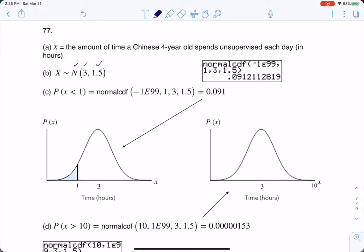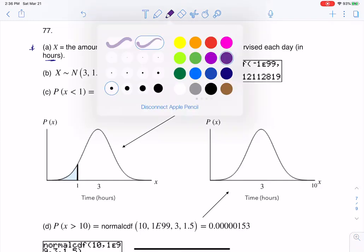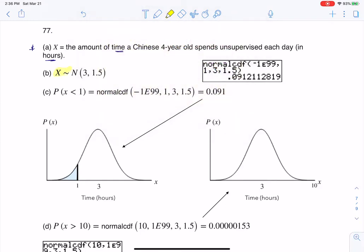All right, so our variable here, you can see it in Part A, it's the amount of time that these four-year-olds spend unsupervised, and they gave us the units in hours. Here's our distribution. With the distribution that I'm writing for Part B, I'm going to highlight this in yellow. So the N tells us to make the bell curve here, the 3 tells us to put 3 under the peak, and the 1.5 helps us scale it.